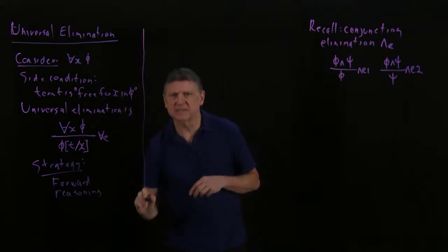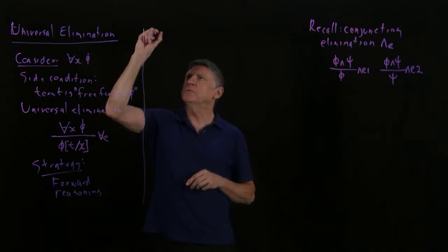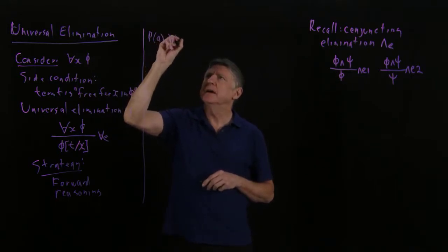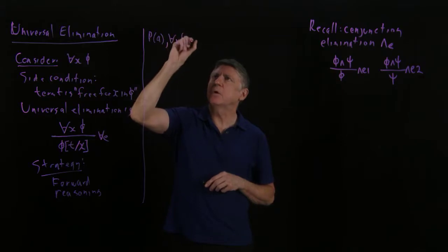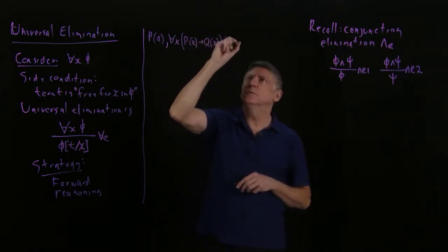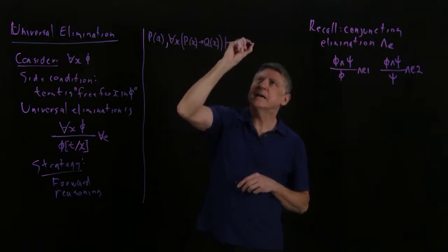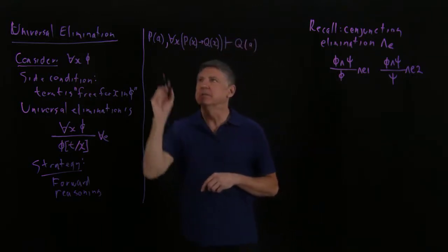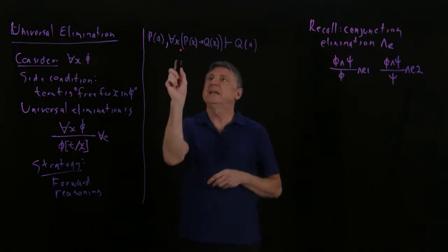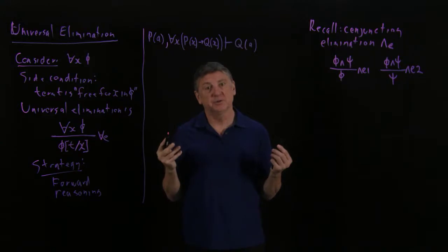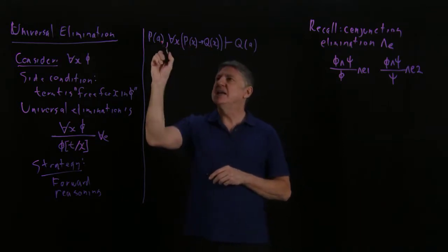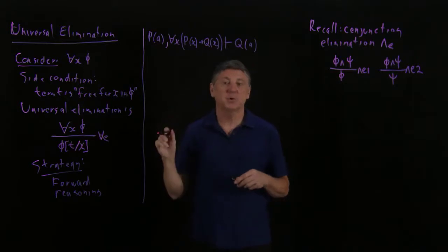So let's try a simple example. Suppose that a property is true of some object a, and that we're saying that everything that has that property also has another property. And from that, we want to conclude that that particular object has that second property. So we could think of p, for example, being a poodle, and q being something that is quiet. So what we're saying is, all poodles are quiet. Now that may not turn out to be true in the real world, but this is logic, right? So we'll say, all poodles are quiet, that's our assertion, and fluffy is a poodle, therefore fluffy is quiet. So let's try to prove this.